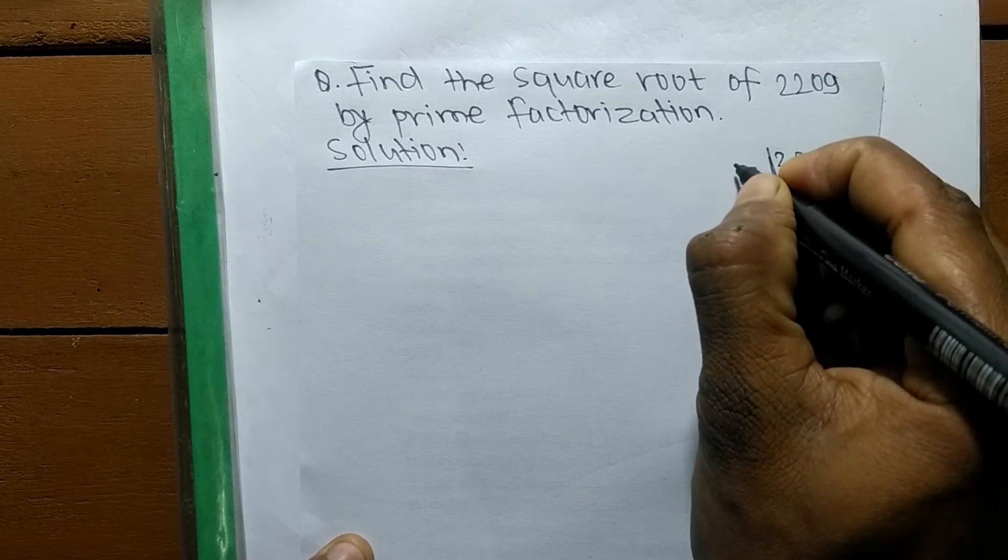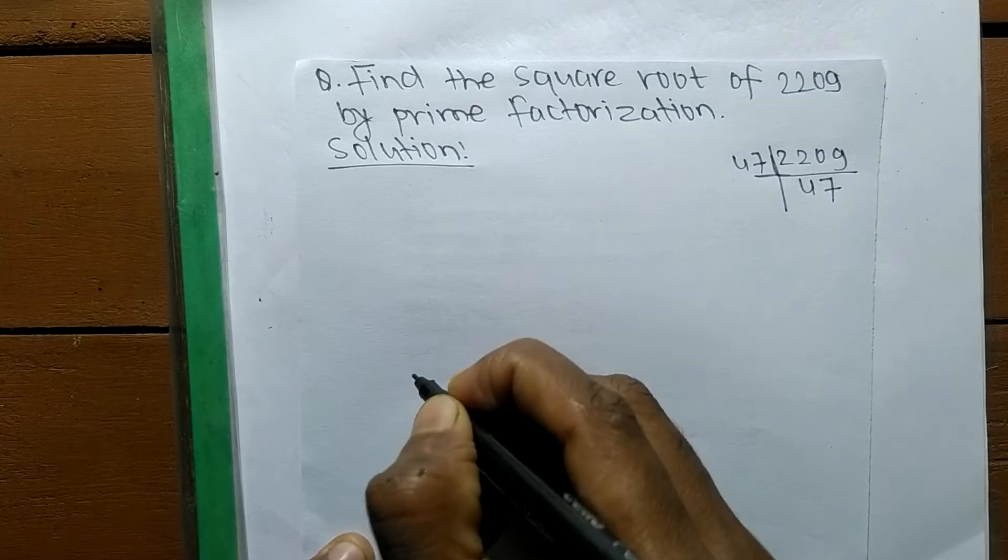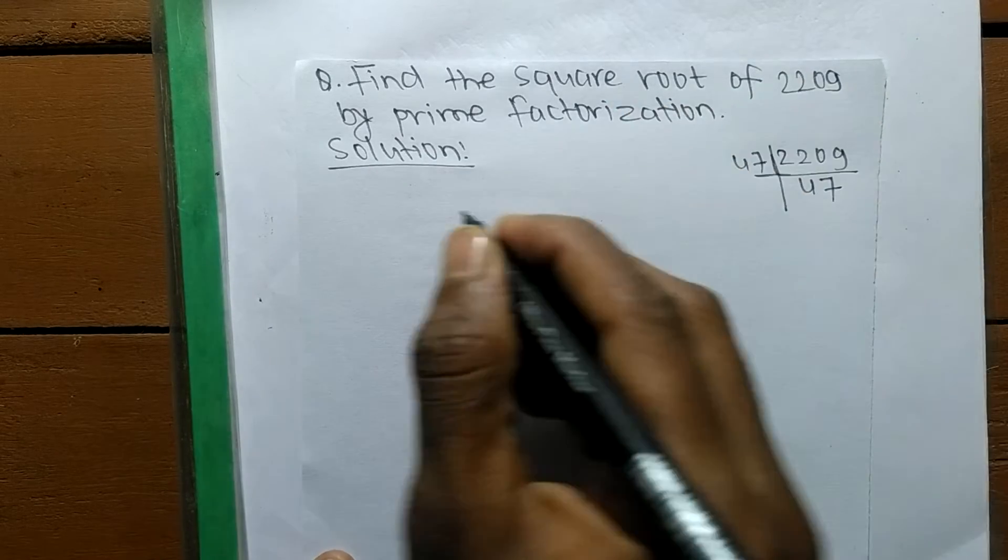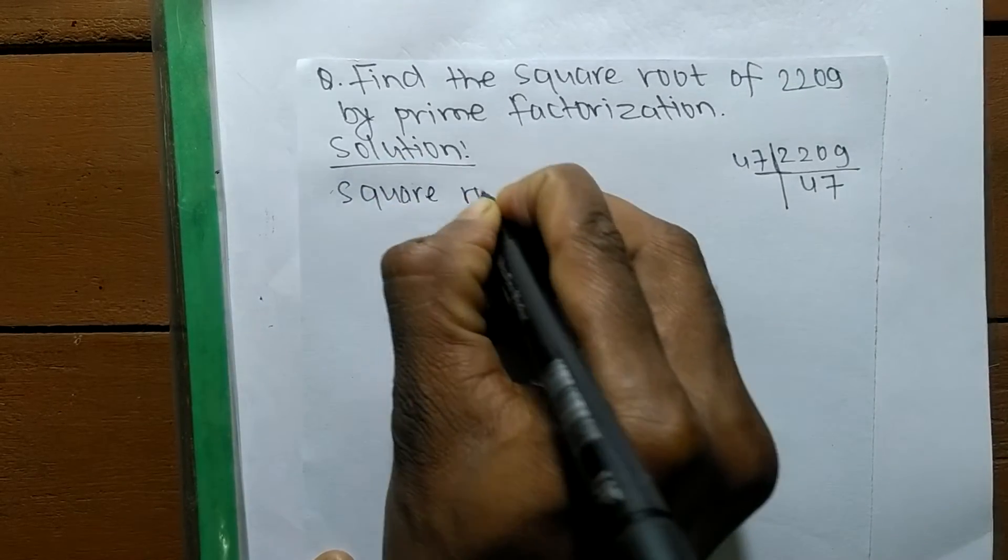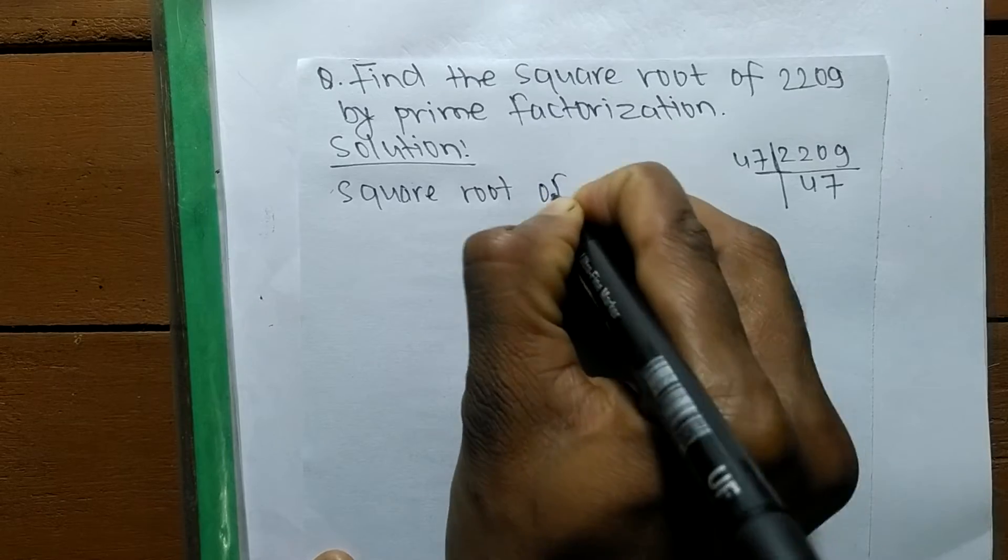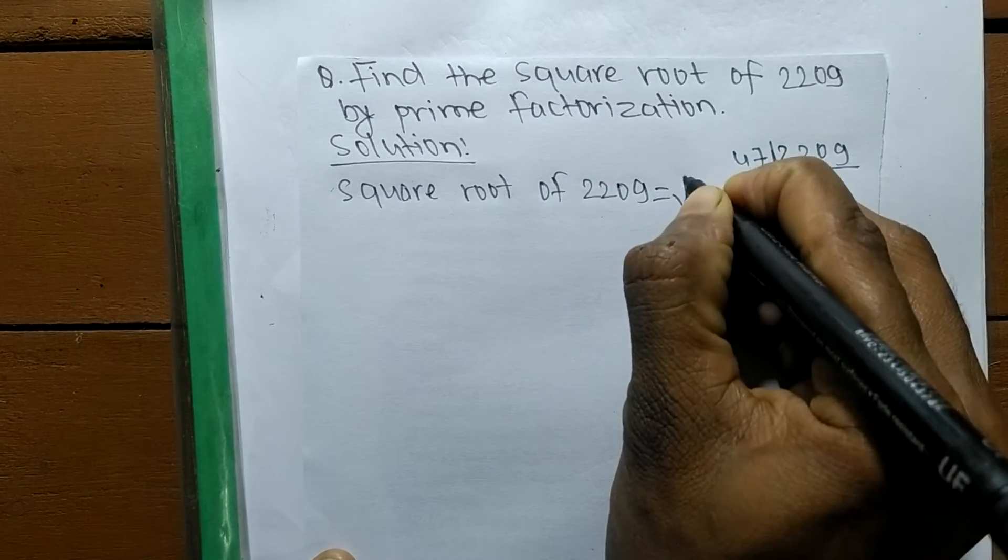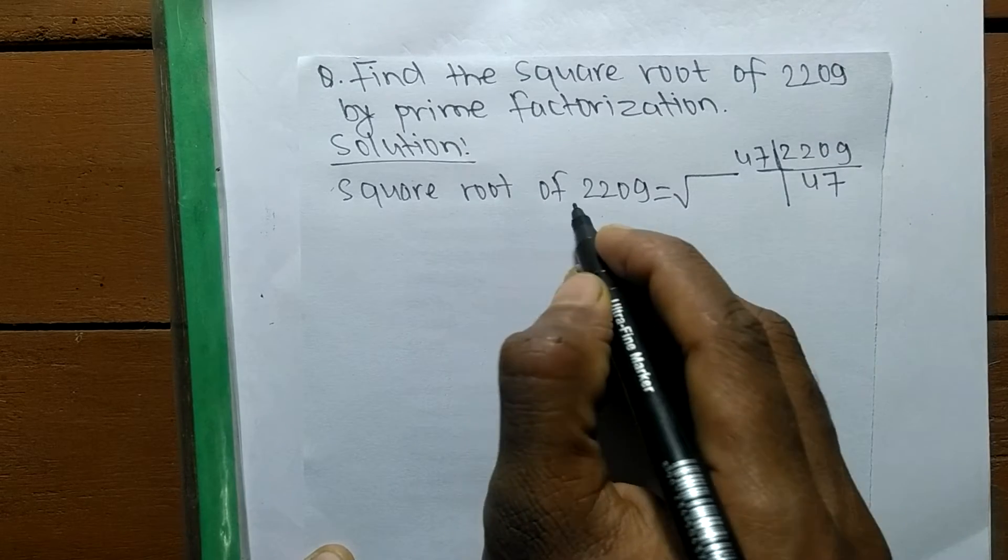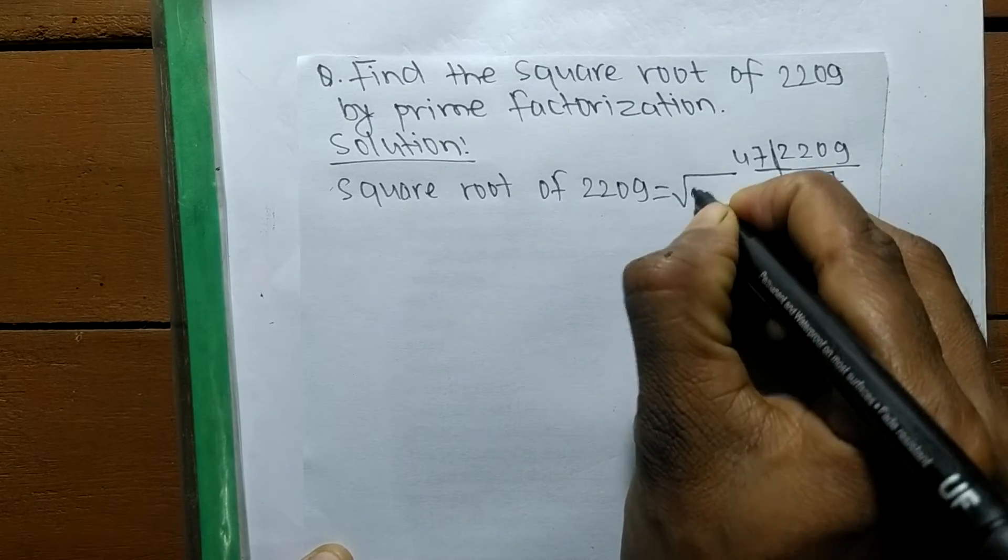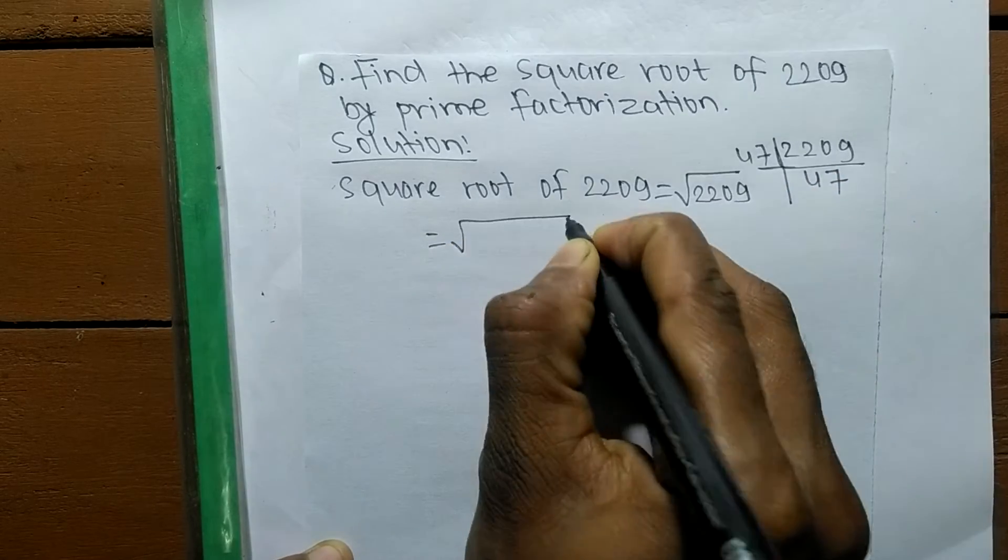The prime factors of 2209 are 47 times 47. We are finding the square root of 2209. This is the square root sign, and now we need to solve for the square root of 2209.